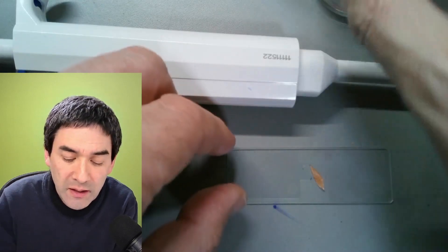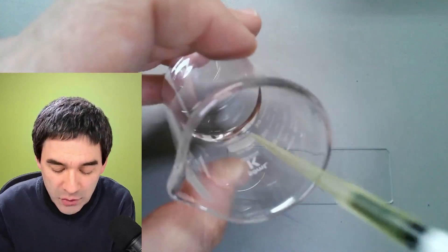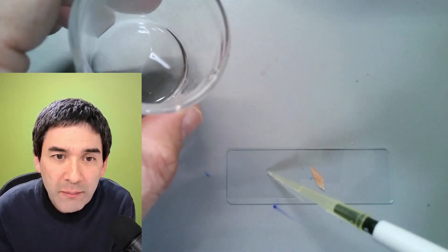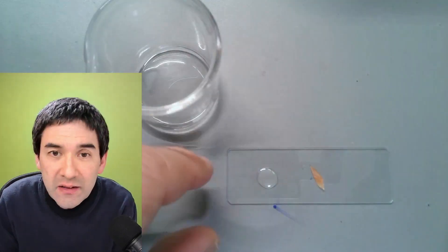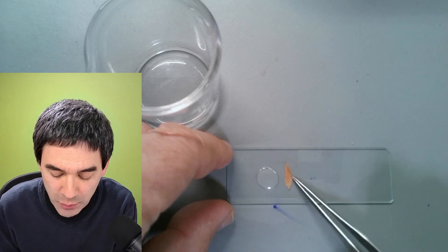So what I need to do is add a small drop of this vegetable oil now on the microscope slide. Usually I add a drop on the microscope slide first then I place the object into the oil. So I'm going to do this by simply pushing it over.